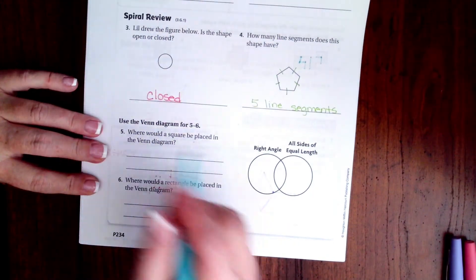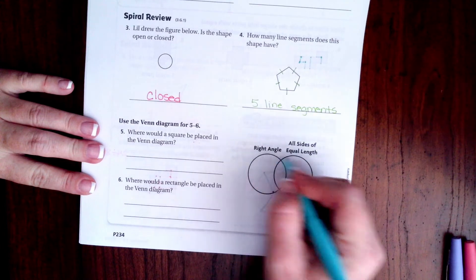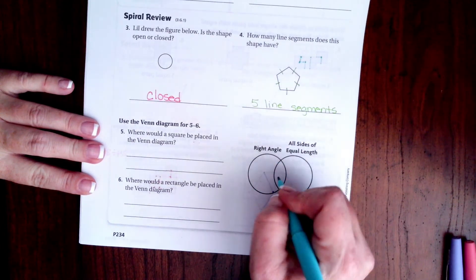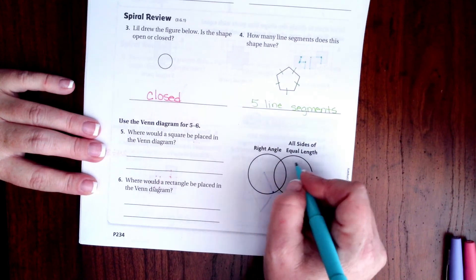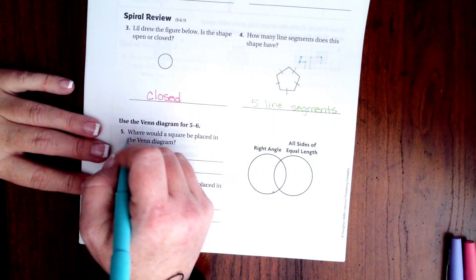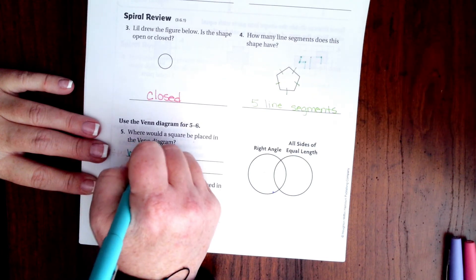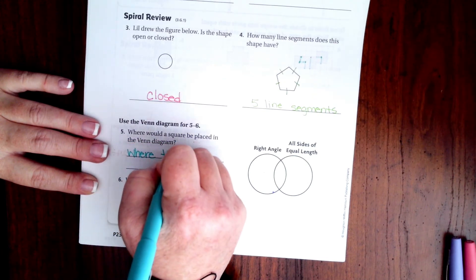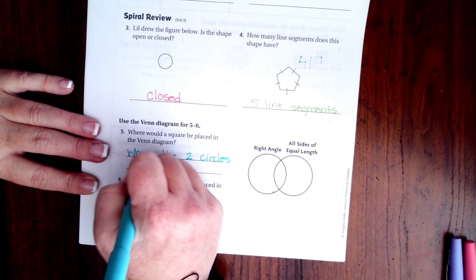All right, where would a square be placed on this Venn diagram? It has right angles and all sides are of equal length. It would be in the middle because it has both of those things, so it would be where the two circles overlap, right in there.